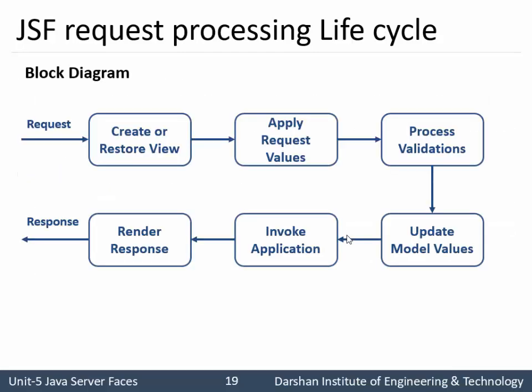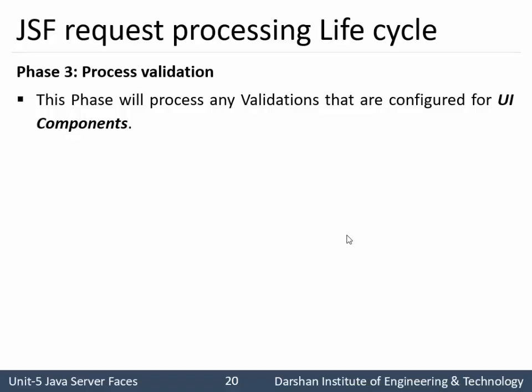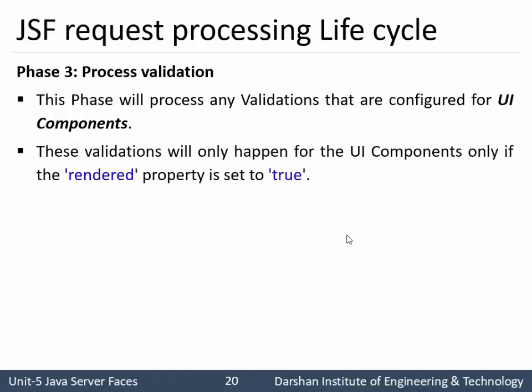Phase 3 is Process Validation. After the component tree is ready from Phase 2, the Process Validation phase processes any validations configured for UI components. Whenever a developer designs a UI component with certain validations, if those validations fail, an appropriate message is sent to the client through the Render Response stage. Validation only occurs for UI components where the render property is set to true.